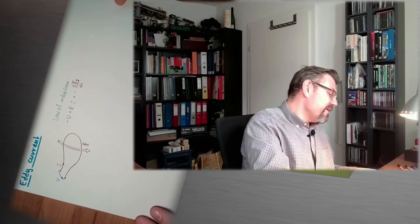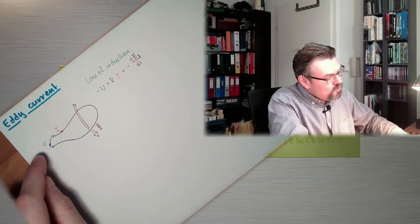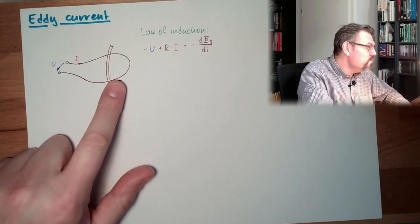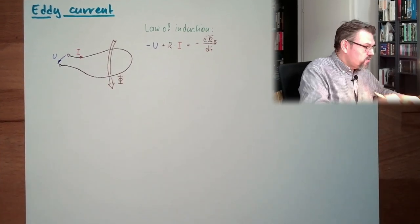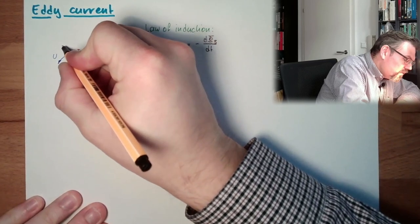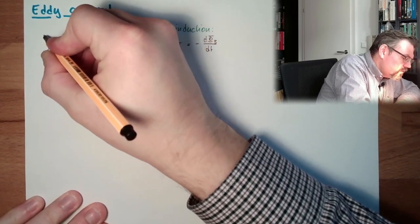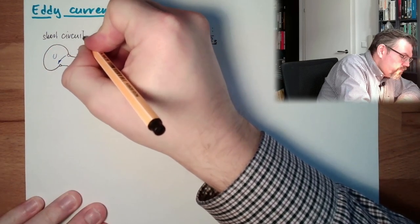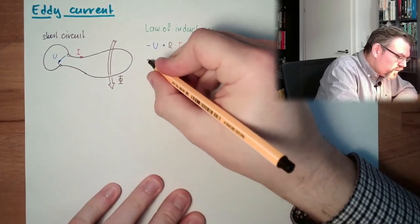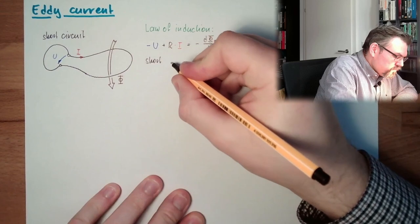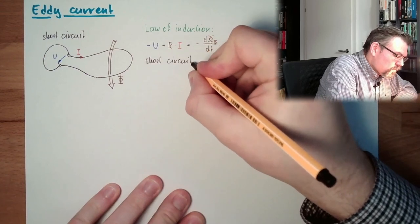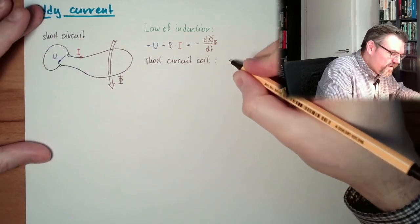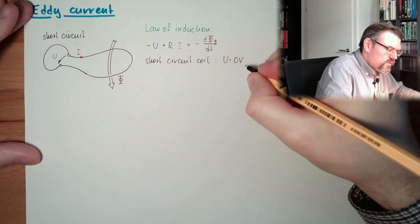To understand what an eddy current is, I have again drawn here our little loop of wire. I have again wrote the law of induction for this loop. And actually what I do, I short-circuit this loop here. Now I connect this, short-circuit. At the short-circuit coil, this coil has now one winding. But at the short-circuit coil there is U equals zero volt. That's the condition.